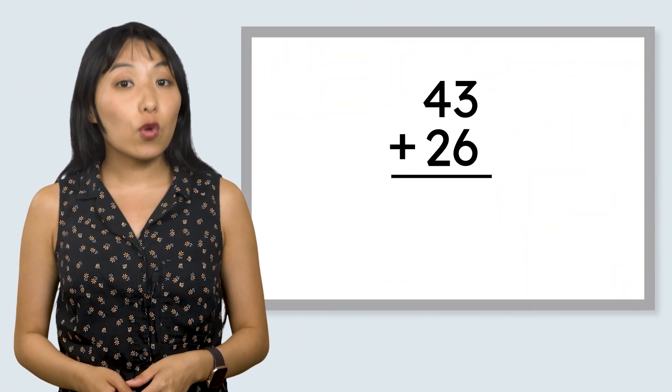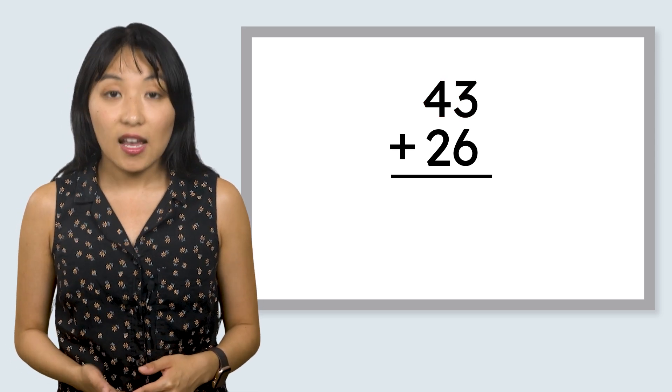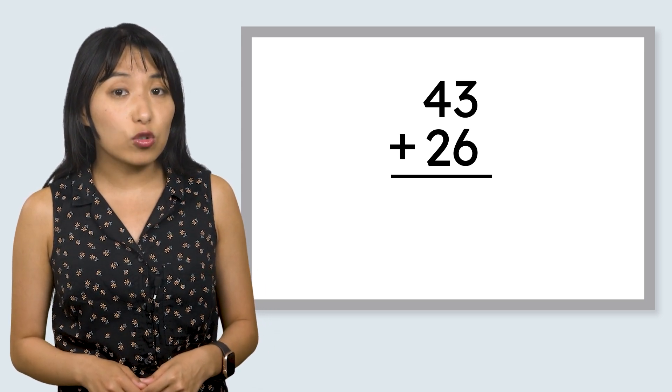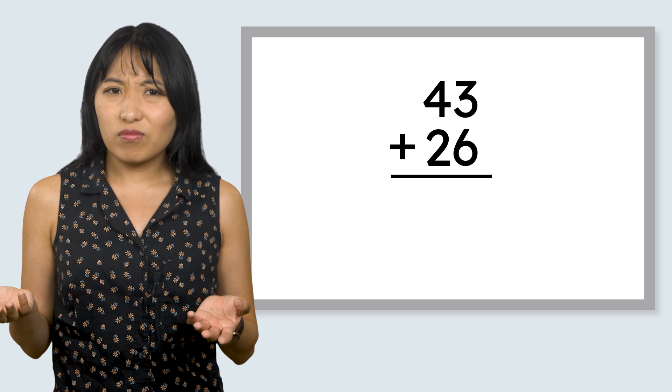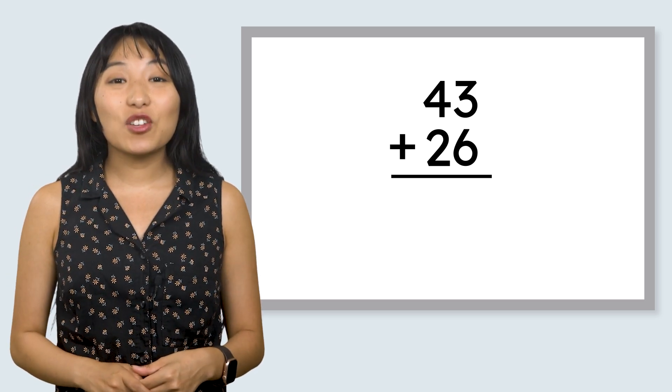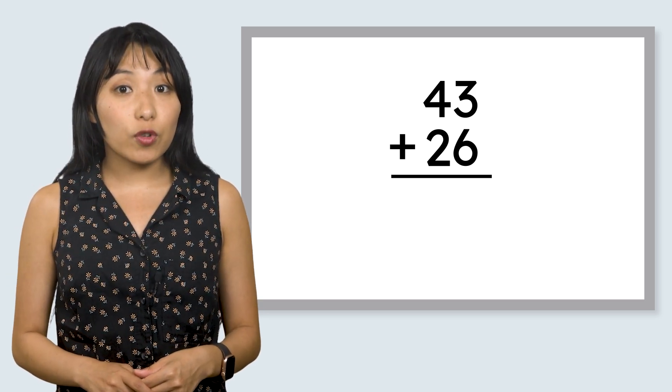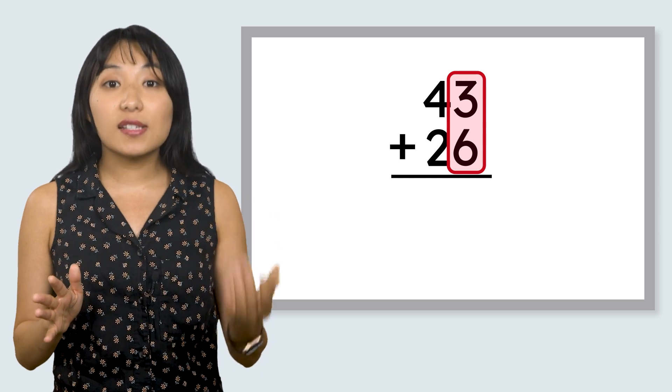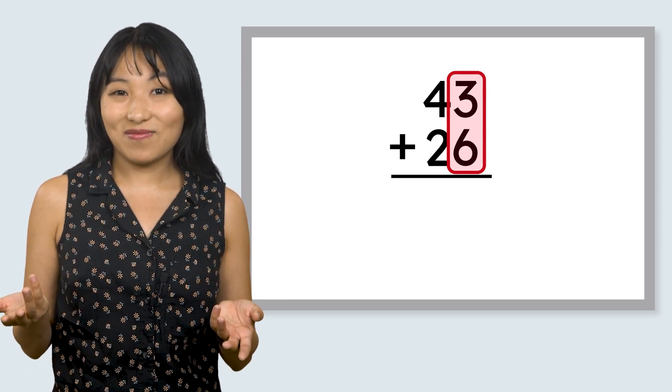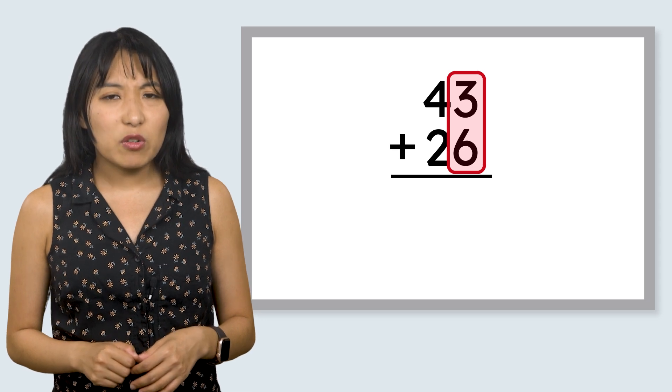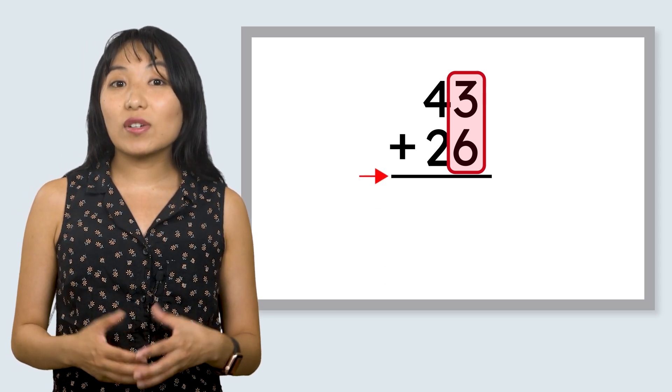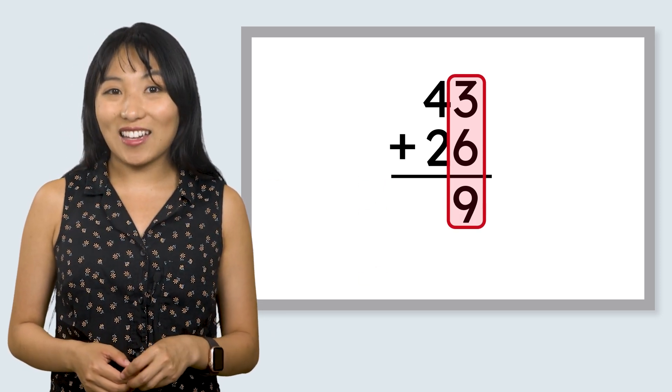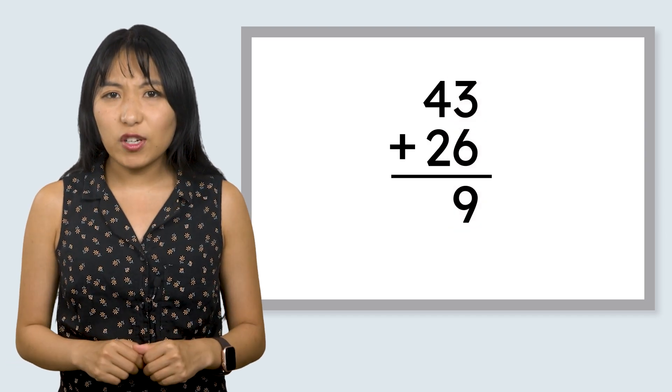The number 43 has four tens and three ones. The number 26 has two tens and six ones. If we were going to use base 10 blocks to add these two numbers together, what would we do first? We would start by adding the ones together. When we add numbers vertically, we start with the ones too. Starting at the top, we have three ones plus six ones. What is three plus six? Nine. But where do we write our answer? This line here is like the equal sign in vertical addition. We write our answer below the ones underneath the line. Perfect.